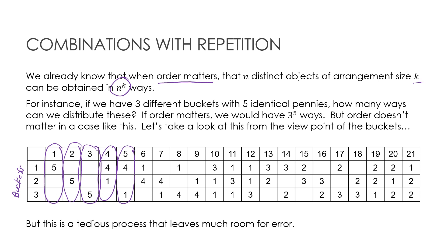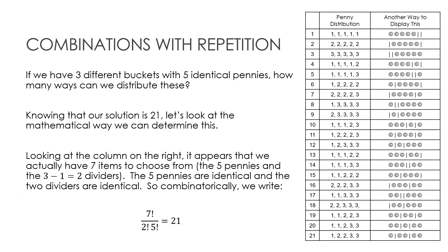But obviously there are a lot of ways to make a mistake here, so let's talk about a better way to do this. Same exact question — I want to look at another way to display it. Knowing that our solution is 21, the second column shows where the pennies will go: penny one goes in one, penny two goes in one, penny three goes in one, etc. What I really want to focus on is this: all five coins in bucket one uses two dividers I'm not really using, or all five in bucket two, or all five in bucket three. I'm following the same pattern — using five, or four in one, or four in one and one, etc.